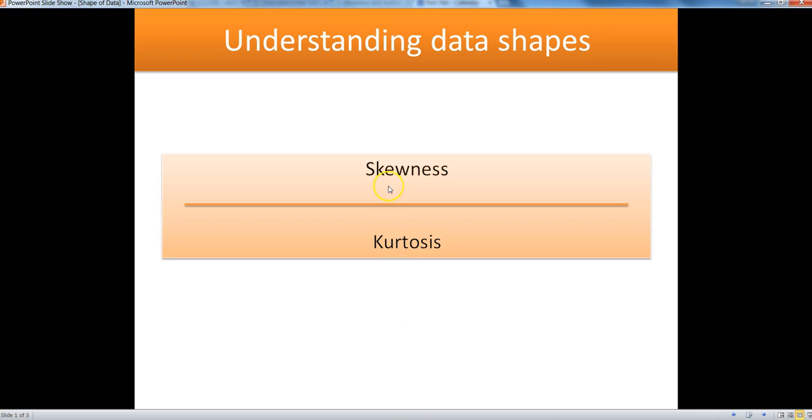The first one is skewness and the second one is kurtosis. In this video we will look at skewness. We will see the different types of data shapes through which we can know the different categories within skewness, and in the next video I will talk about kurtosis.